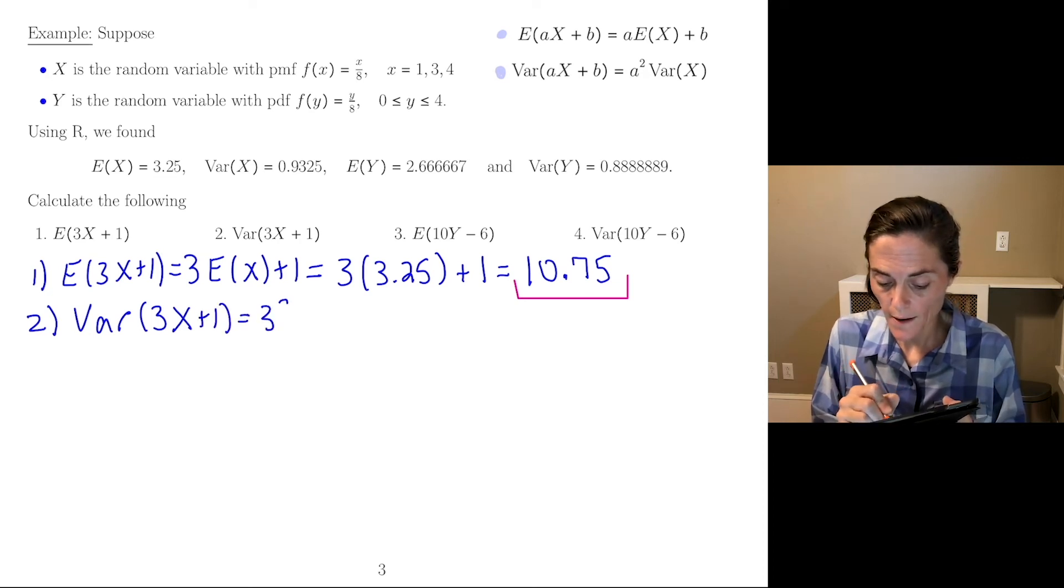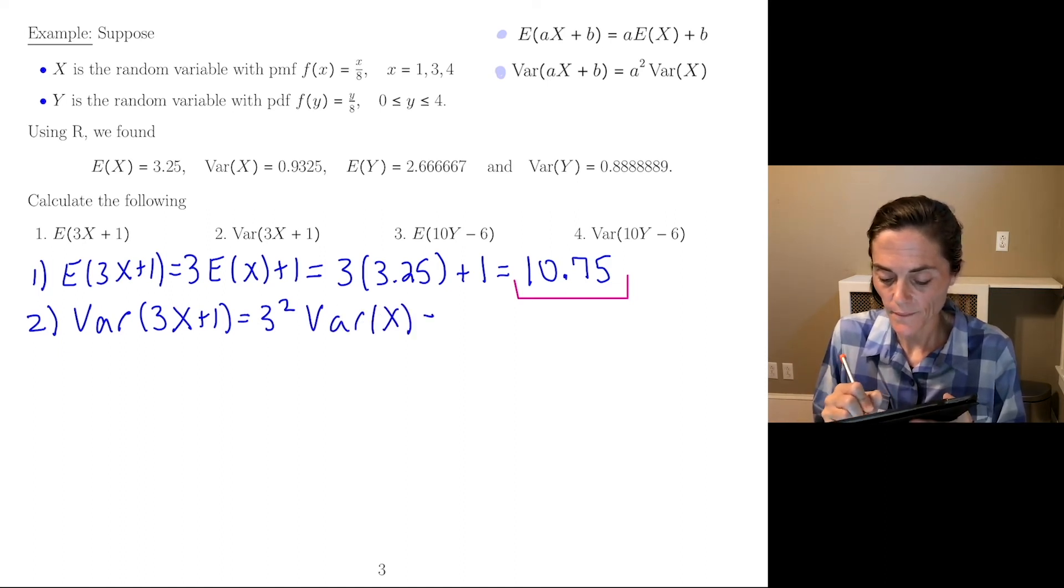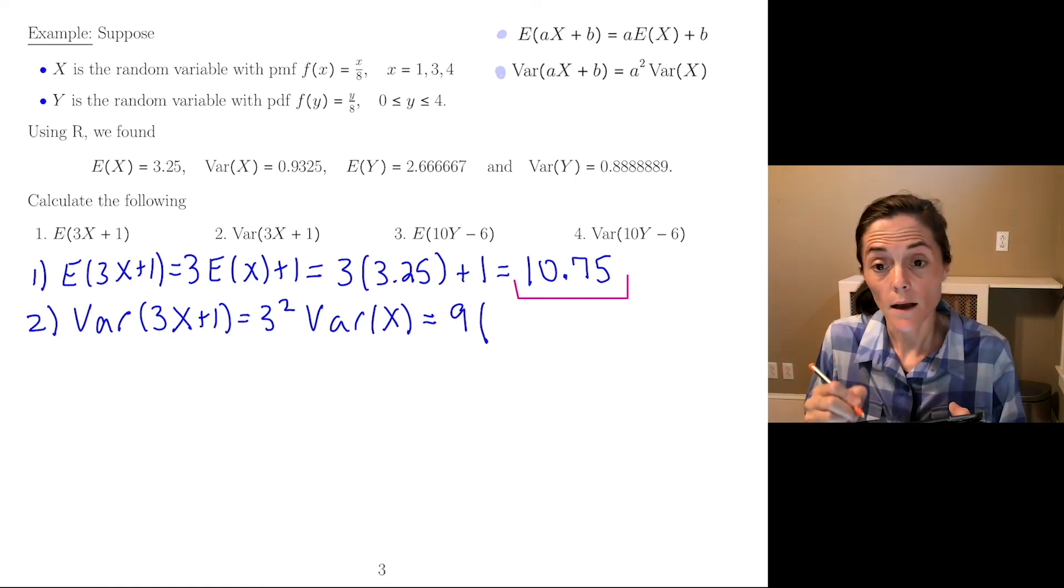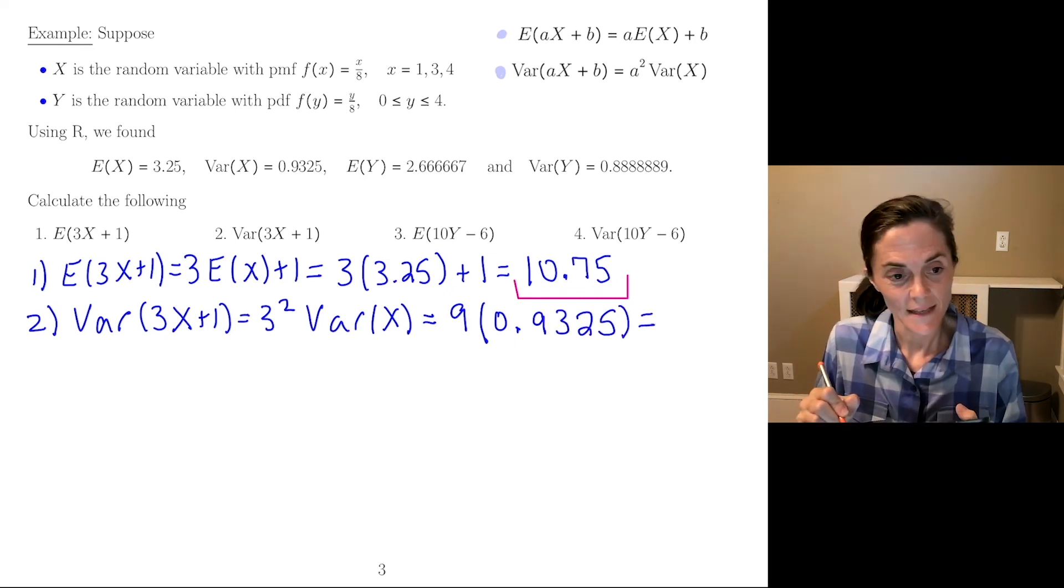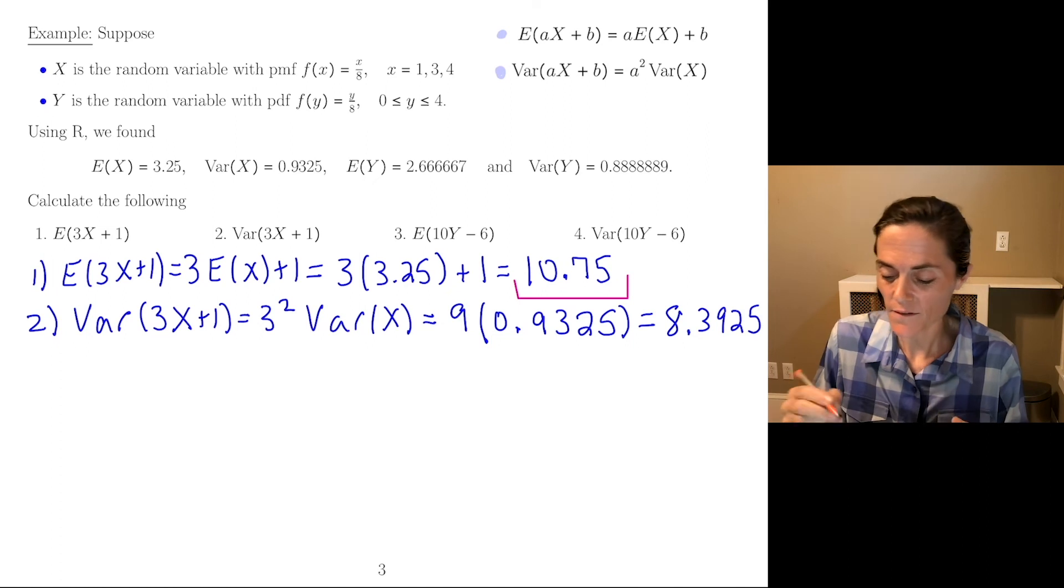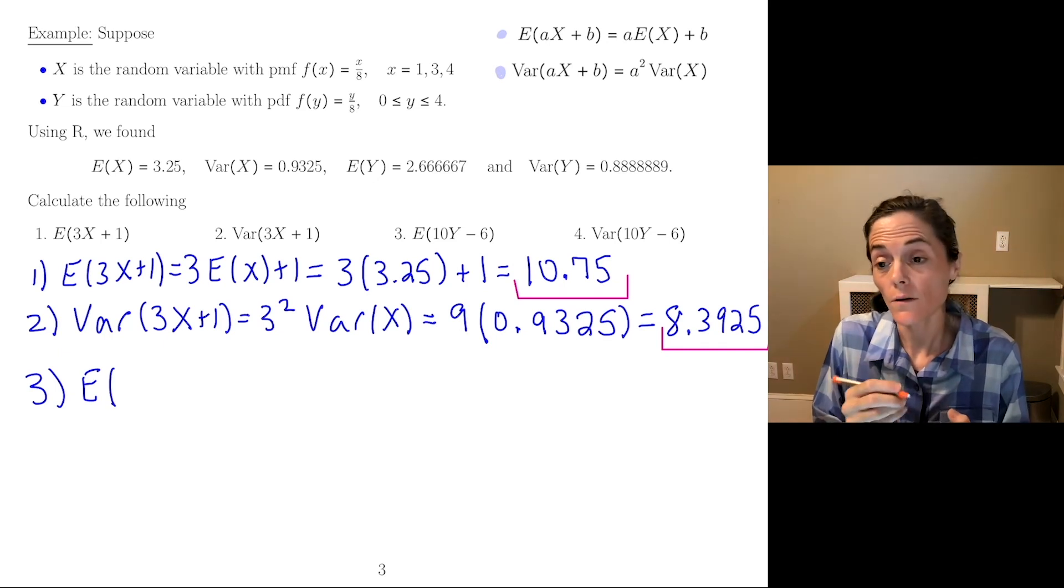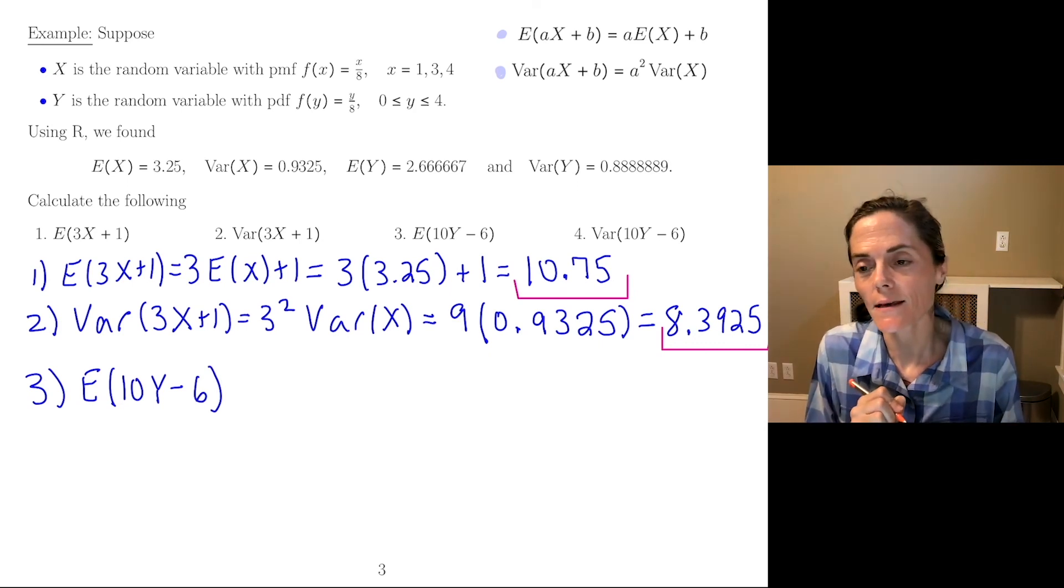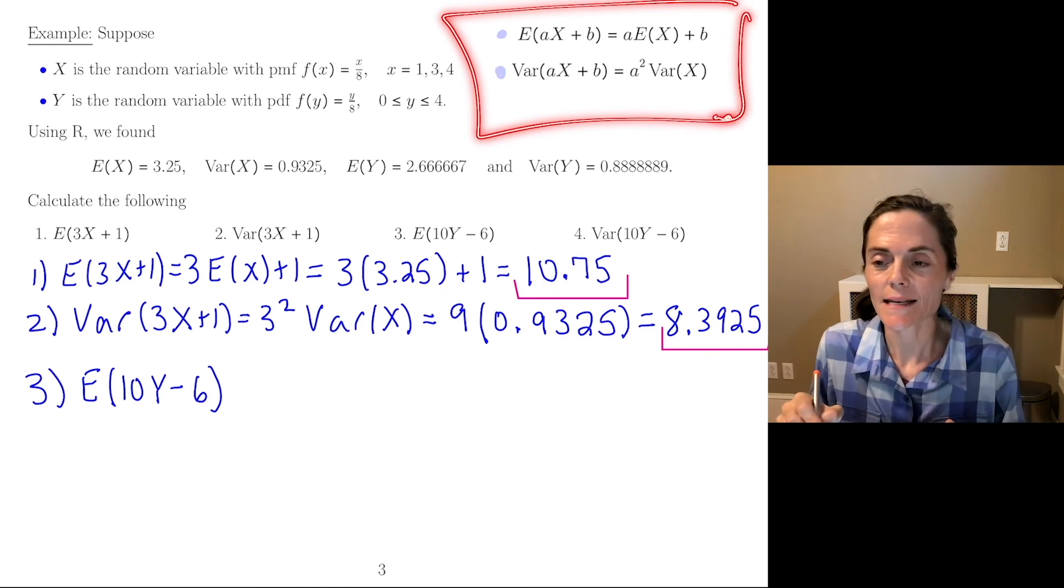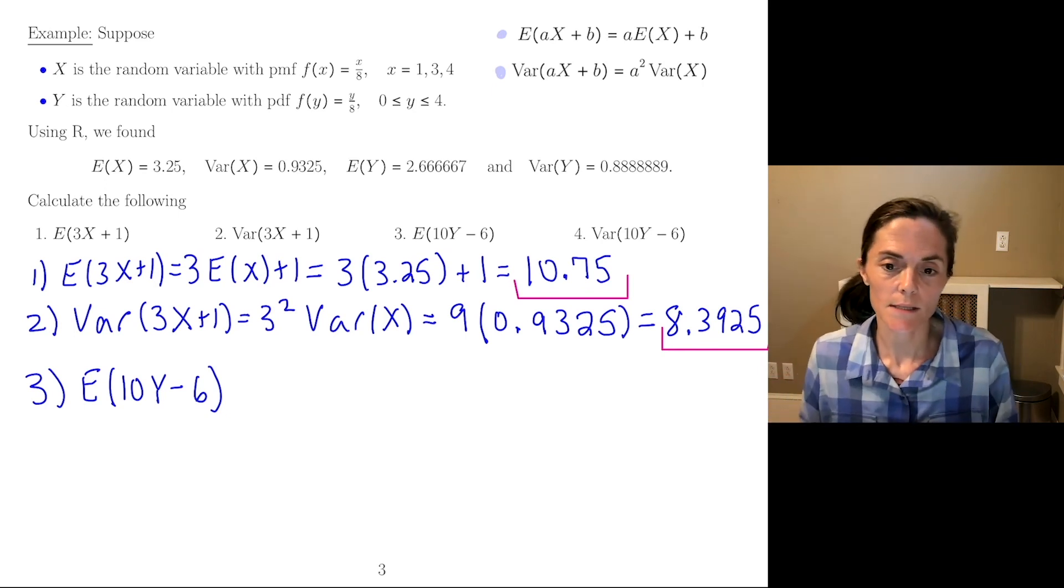Next one. Same random variable, but we want the variance of 3X plus 1. This would be 3 squared times the variance of X. This will be 9 times 0.9325, which I have 8.3925.